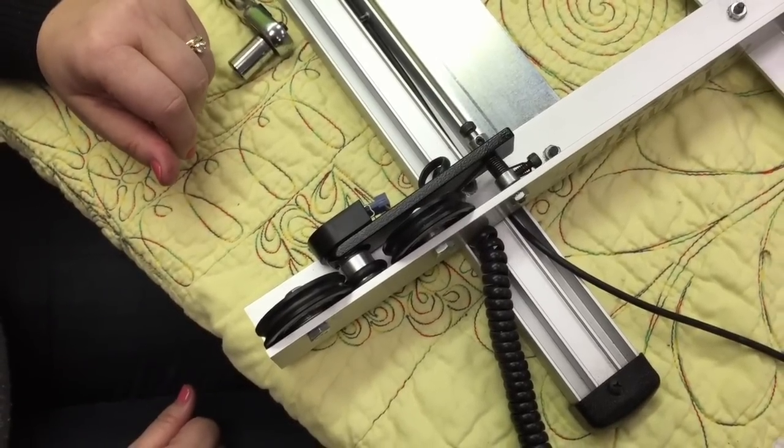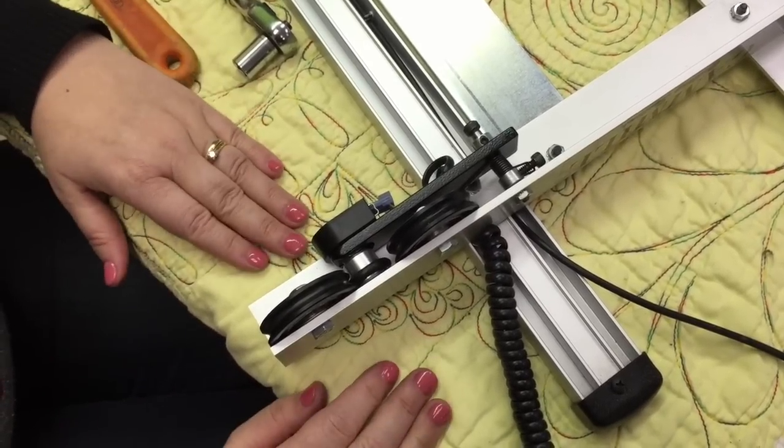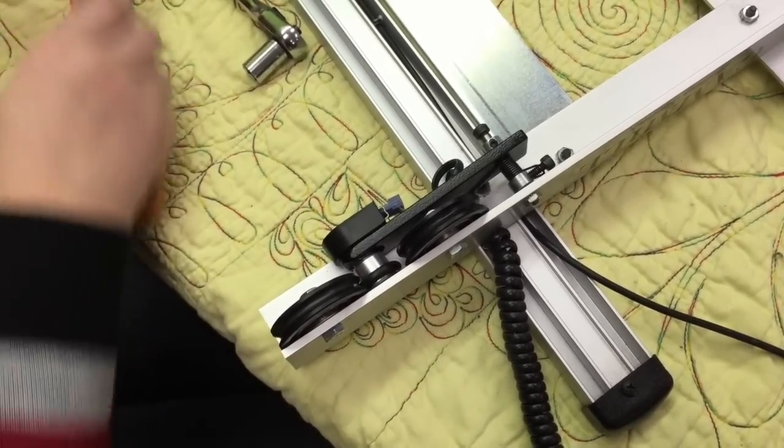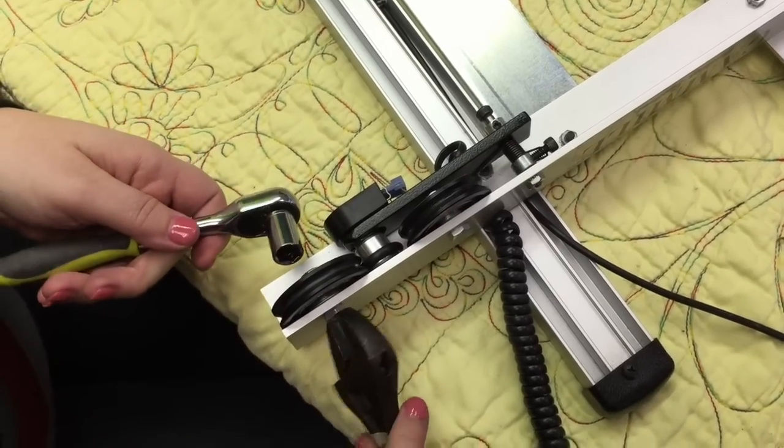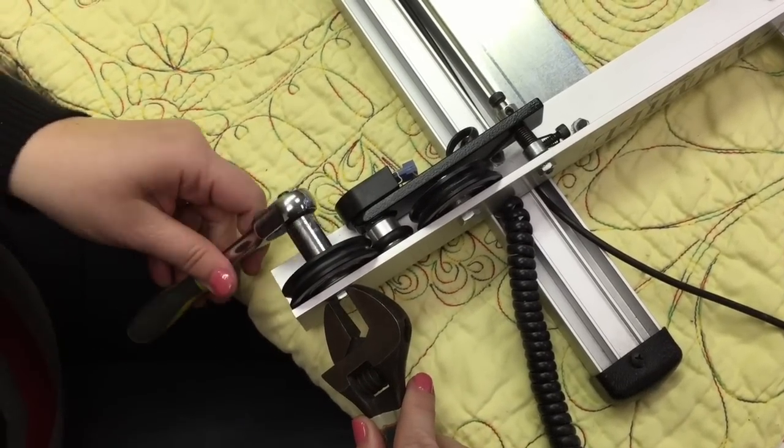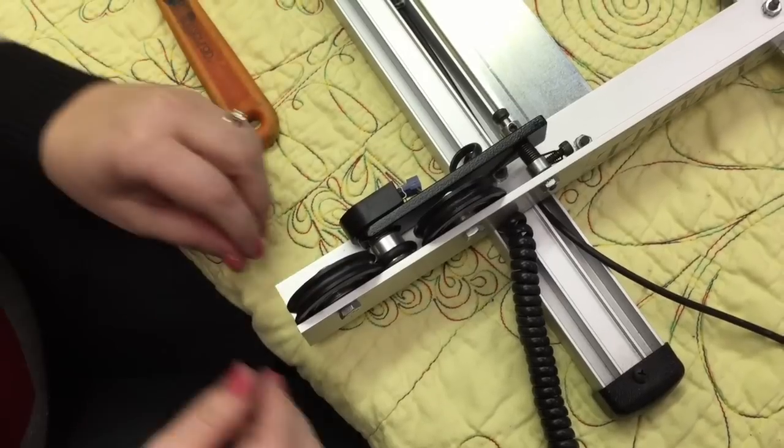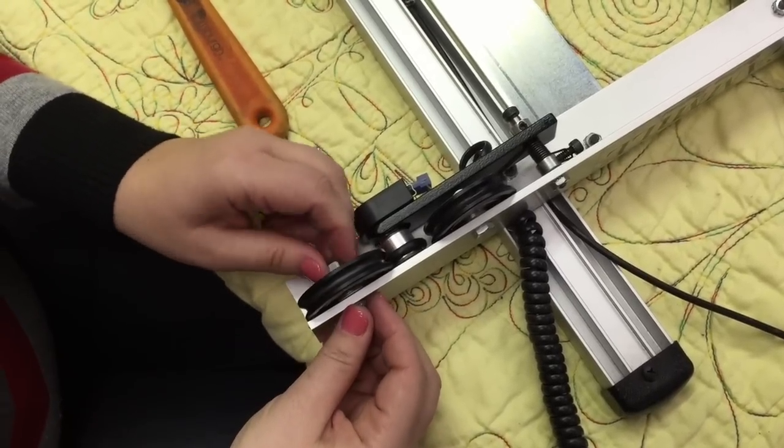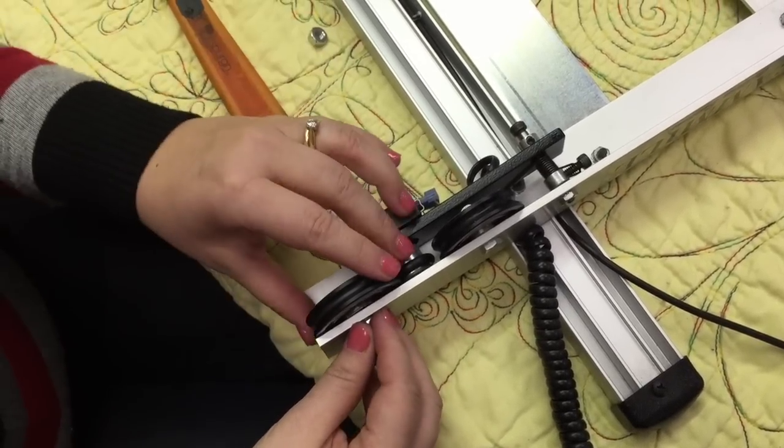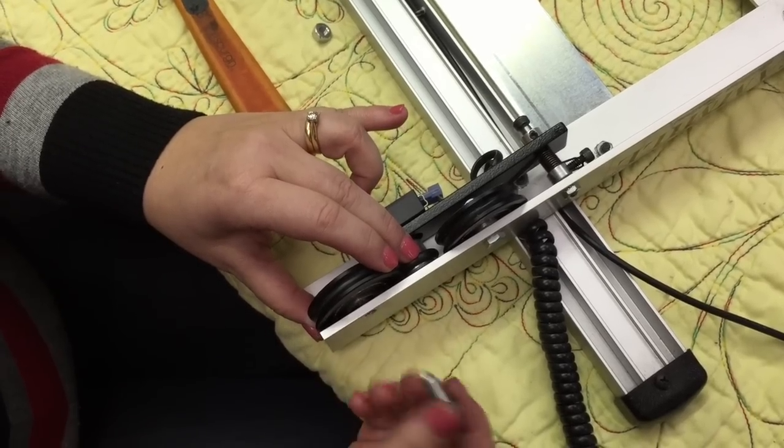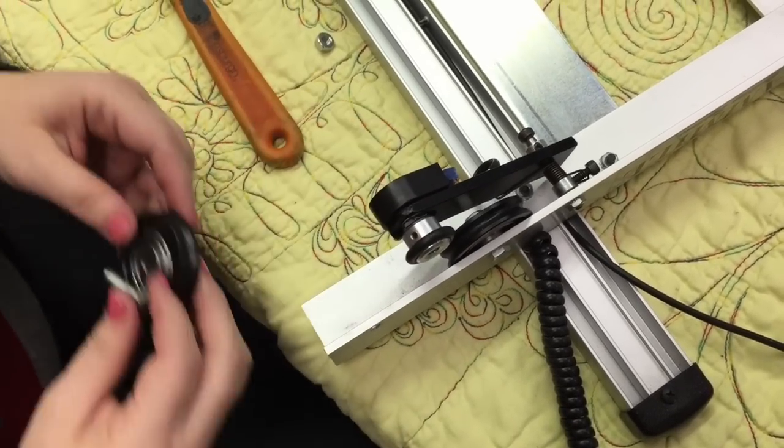Now that we've taken the machine off the Crosstrak and brought the Crosstrak over here to a table, we're going to get our tools and we need to remove this wheel. Once we've loosened it, take the nut off and take the screw out, the wheel off, and that releases the encoder.